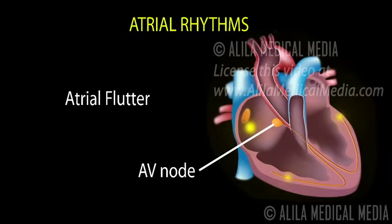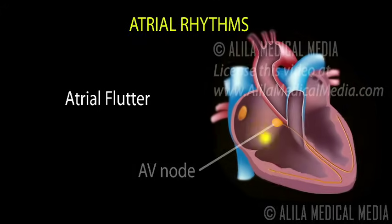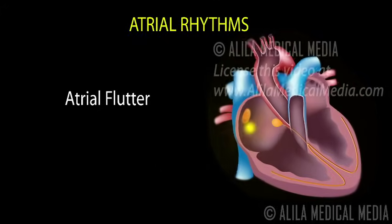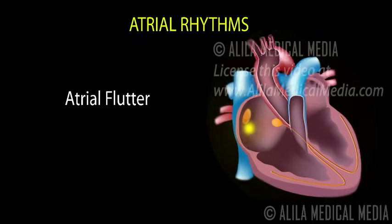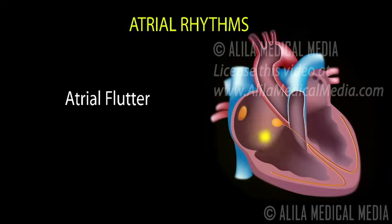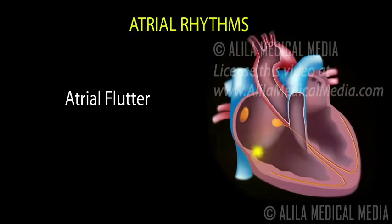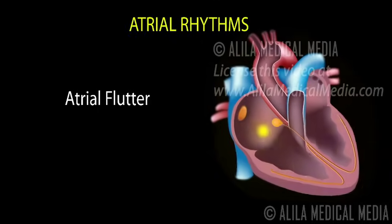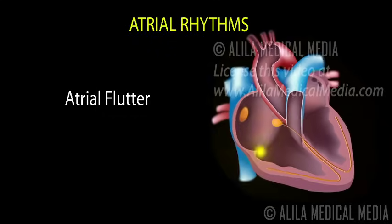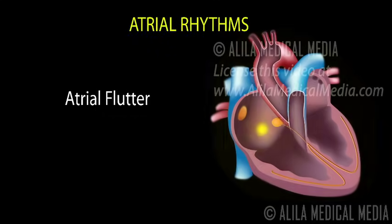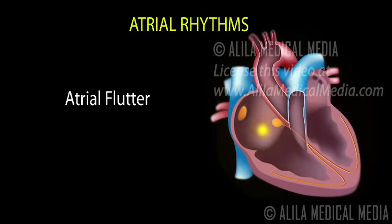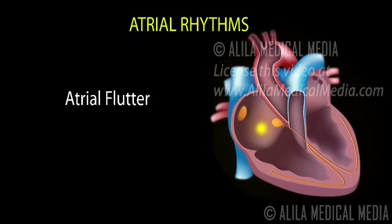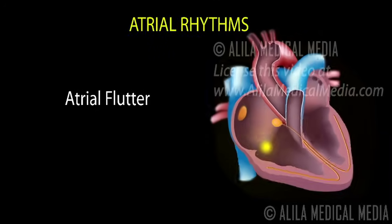The AV node blocks part of atrial impulses from reaching the ventricles. In this example, only one out of every three atrial impulses makes its way to the ventricles. The ventricular rate is therefore three times slower than the atrial rate. This is an example of a 3 to 1 heart block. Ventricular rate in AFlutter is usually regular, but it can also be irregular.